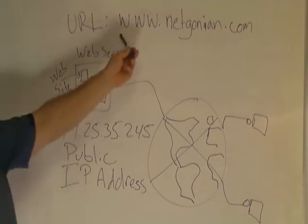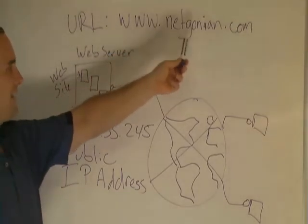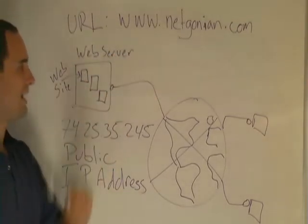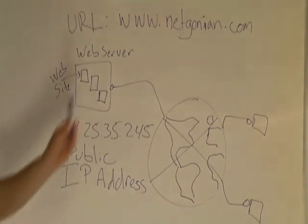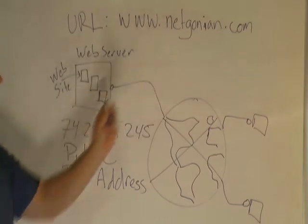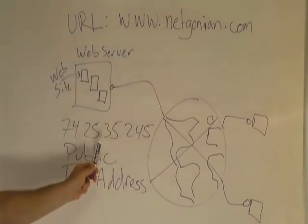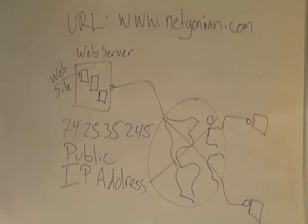They look something like this: www.nickgonian.com. Somehow, this URL gets translated into that number and gets you to the website.